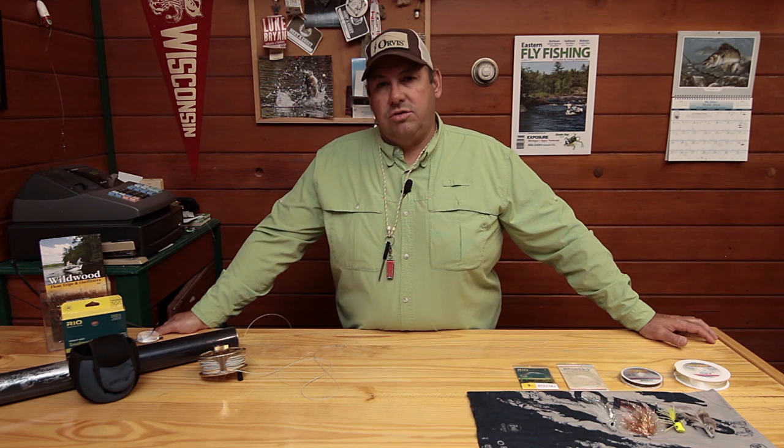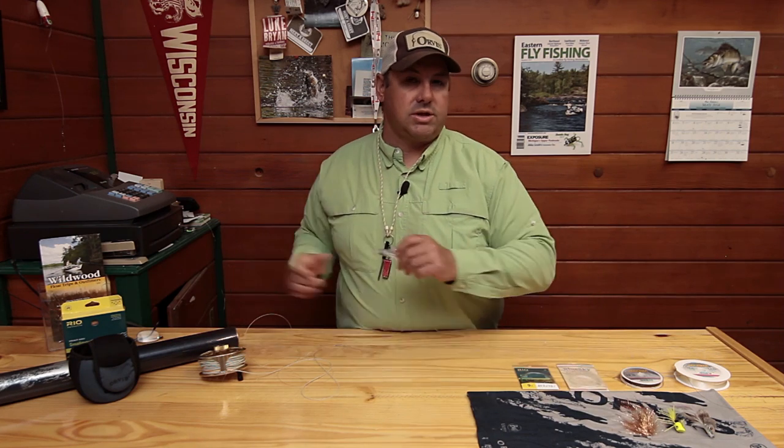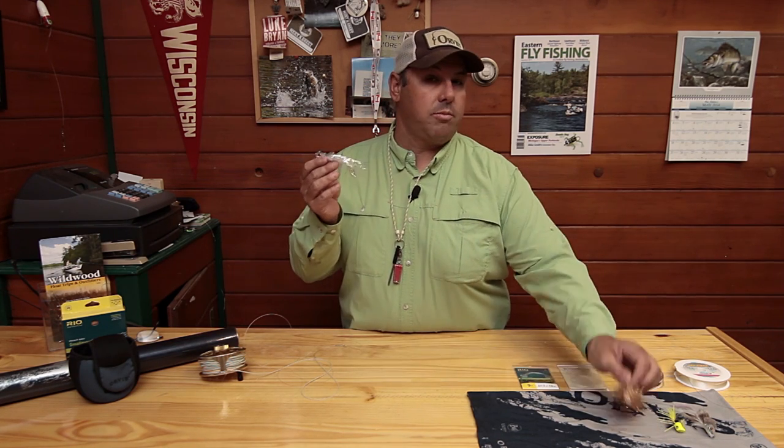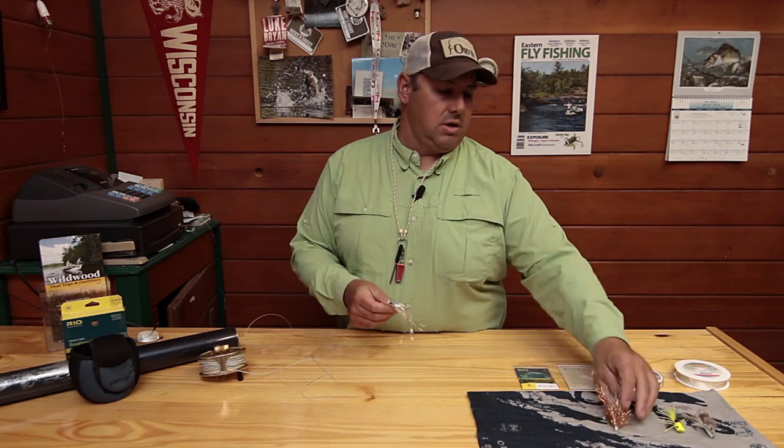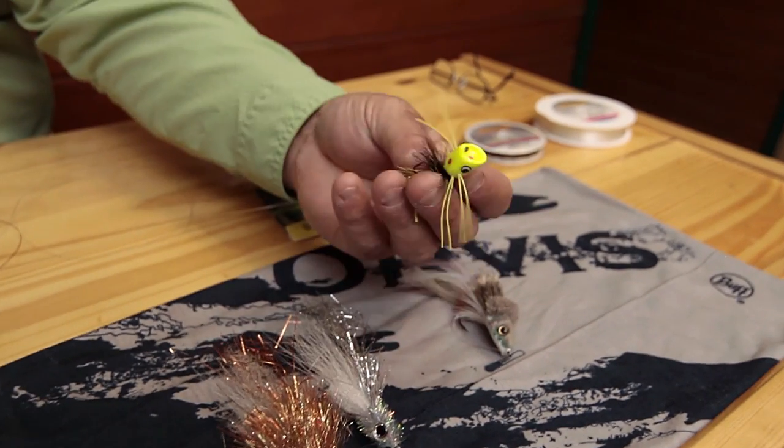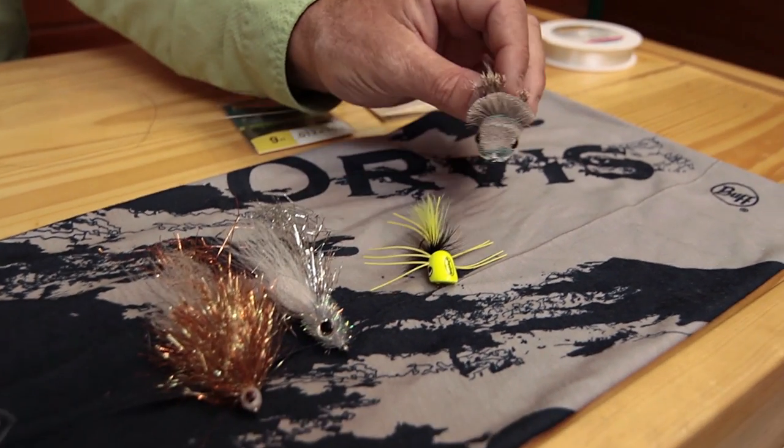What it takes to get the job done up here in the Northwoods is usually a seven or eight weight rod. We like to fish bigger flies and you can see some of these are pretty good size, most of them are saltwater patterns that we use. These are our minnow patterns typically used, and when we go up top I'm using basically a popper of some kind or a deer hair diver.